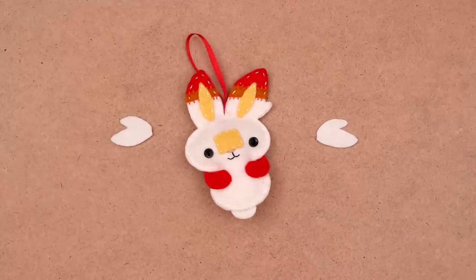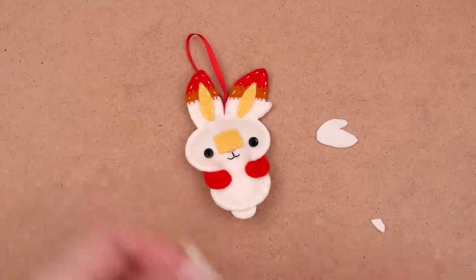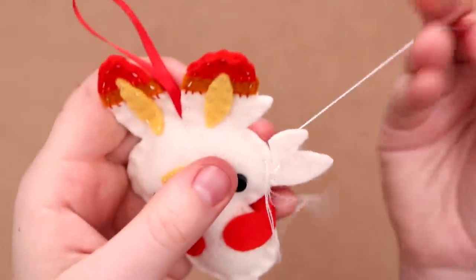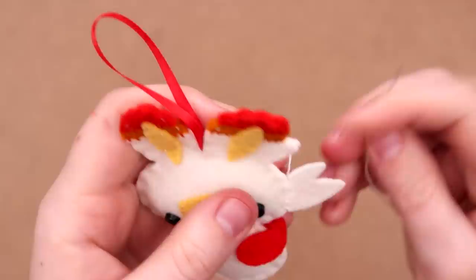So instead of undoing the whole seam around the body, I decided to just attach them to the sides and it turned out pretty cute, resulting in an adorable Scorbunny ornament.